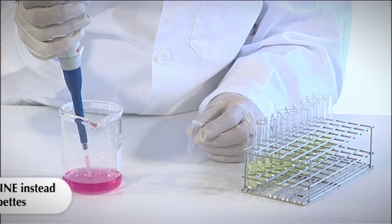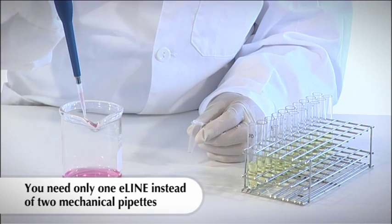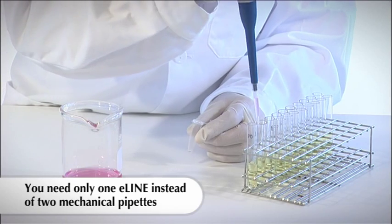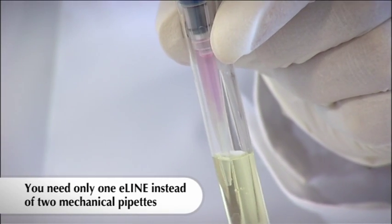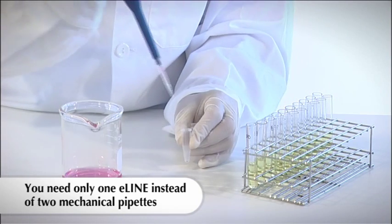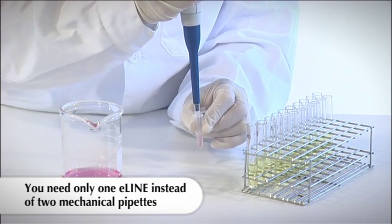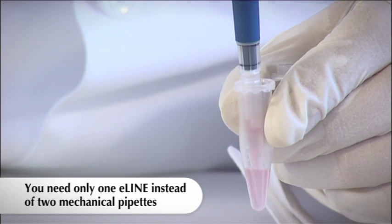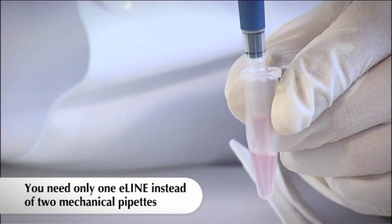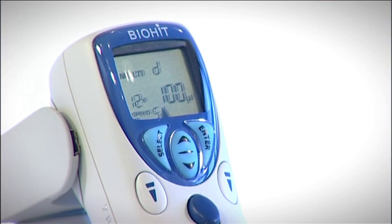A general misconception related to electronic pipettes is that they are believed to be much more expensive than mechanical pipettes. This is partly true. However, it's good to bear in mind that one E-Line covers the volume range of two or even more mechanical pipettes. The extra-wide volume range enables you to do several pipetting tasks, such as diluting with a single unit. In other words, instead of working with two mechanical pipettes, you need only one E-Line.